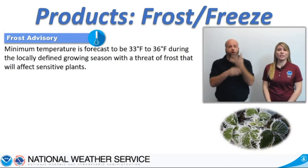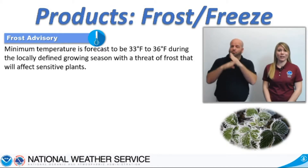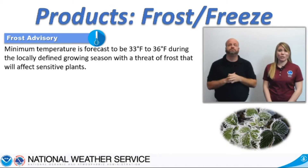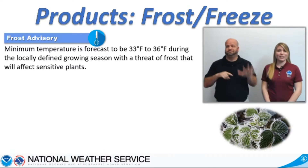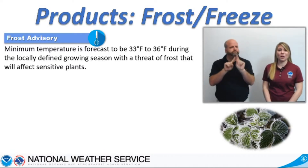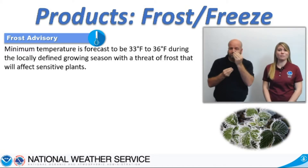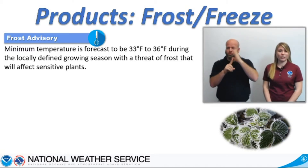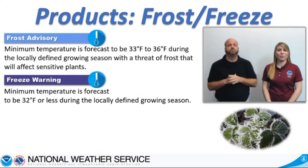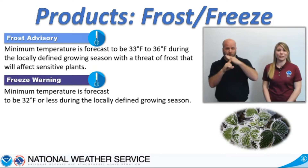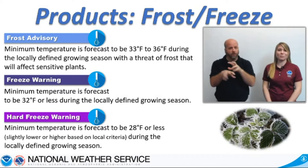During the growing season, look for the issuance of frost and freeze alerts. This will help you prepare any sensitive vegetation ahead of the arrival of cold temperatures. Growing seasons differ across the country. Therefore, there are different guidelines on the issuance of frost and freeze alerts, so be sure to know your local criteria. A frost advisory is issued when minimum temperatures are forecast to be 33 to 36 degrees with the risk of damage to sensitive plants from frost. A freeze warning is issued when minimum temperatures are forecast to be 32 degrees or less. A hard freeze warning is minimum temperatures that are forecast to be 28 degrees or less.